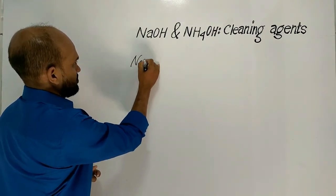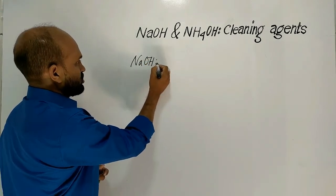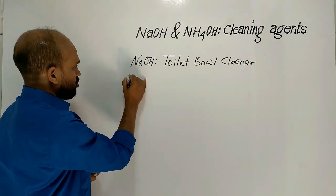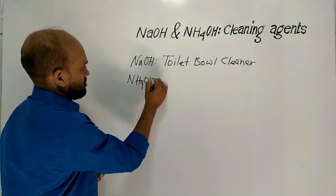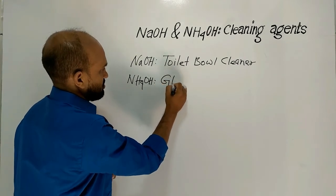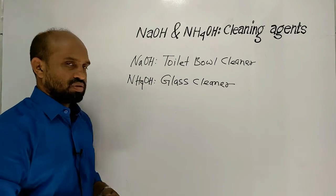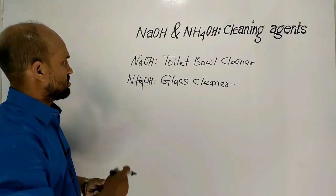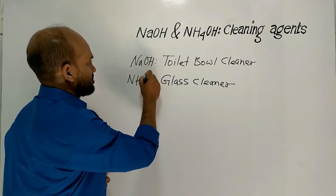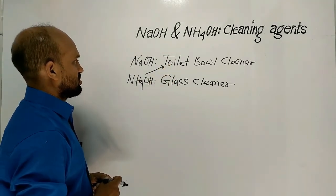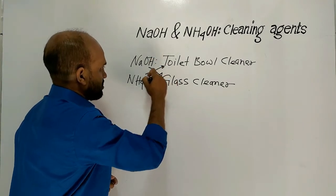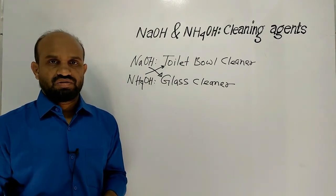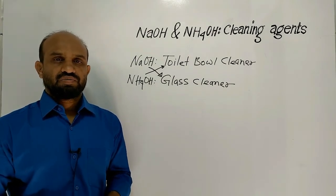Sodium hydroxide is used in toilet bowl cleaner and ammonium hydroxide is used in glass cleaner. Now the point is: what problem will arise when ammonium hydroxide is used in toilet cleaner and sodium hydroxide is used in glass cleaner? This problem can be clarified by two points.